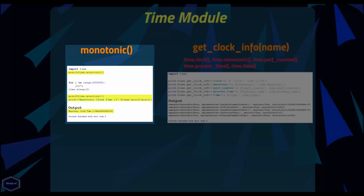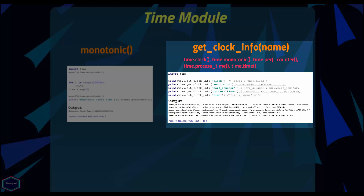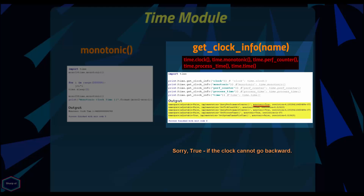In the same example, I call monotonic() at the start and at the end of my program and print the difference between both values. You can use the get_clock_info() function to query about each of these functions. The function returns a namespace object with the following attributes: adjustable — true if the clock can be changed automatically or manually; implementation — the name of the underlying C function used to get the clock value; monotonic — true if the clock can go backward; and resolution — the resolution of the clock in seconds.